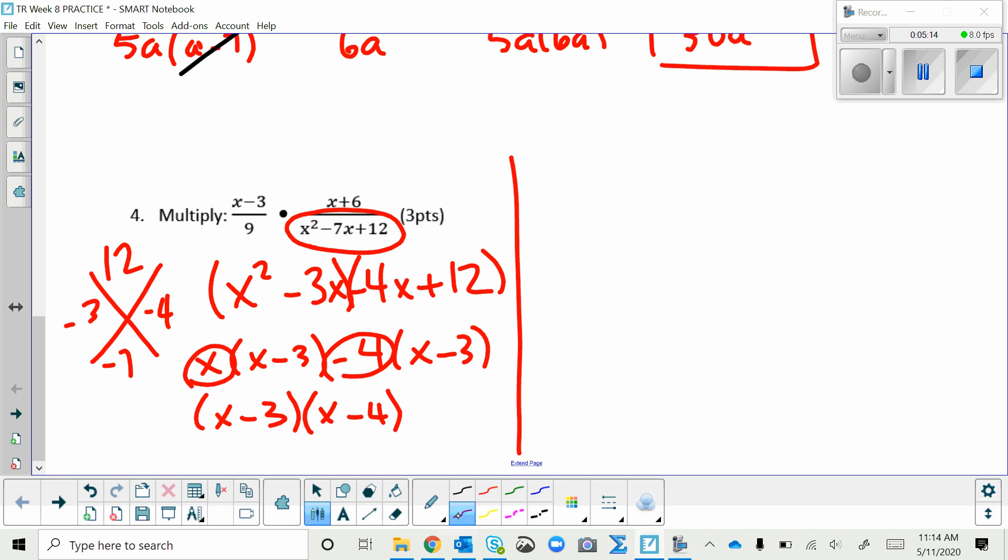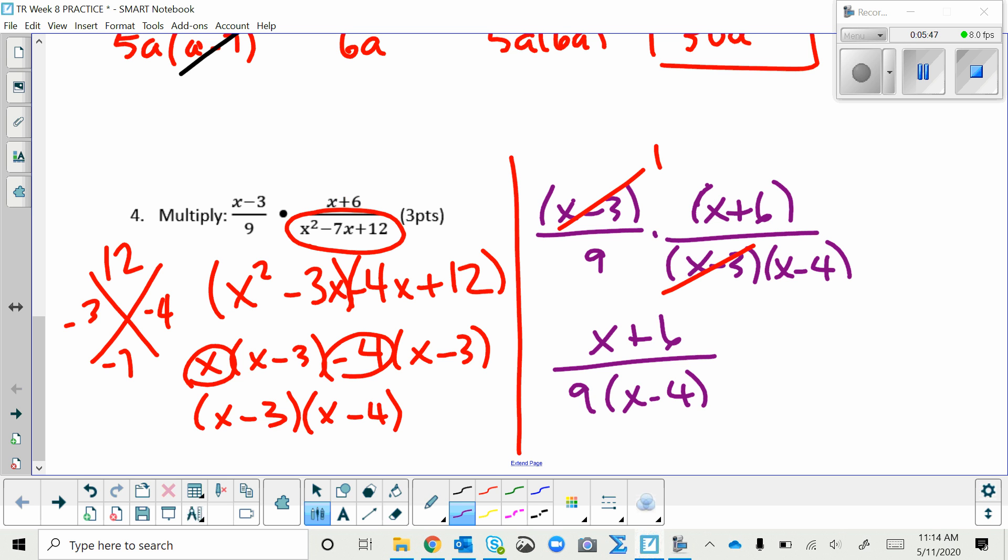So, now I will rewrite the problem with those factors. So what do you see the same on top and bottom that can cancel? The X minus 3 is right, leaving me 1 there. So now I've got X plus 6 over 9 times X minus 4. You can leave it like this or distribute the 9 on the bottom if you like.